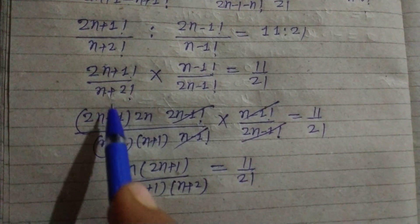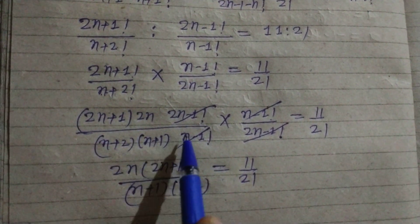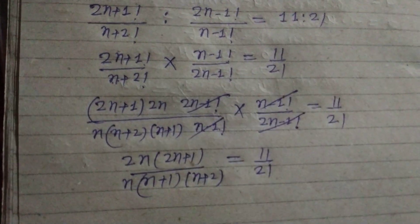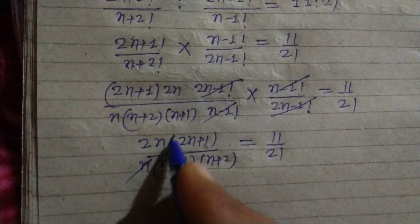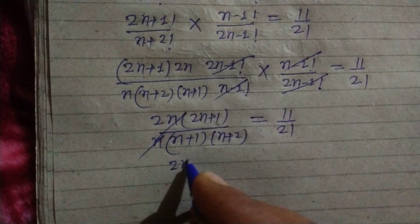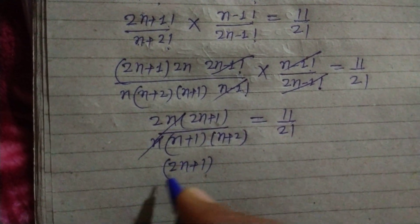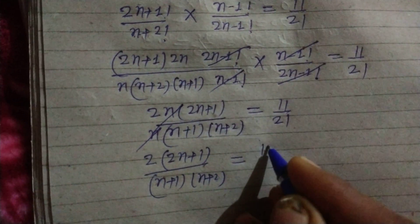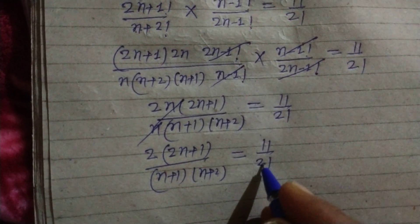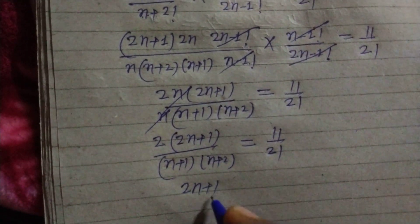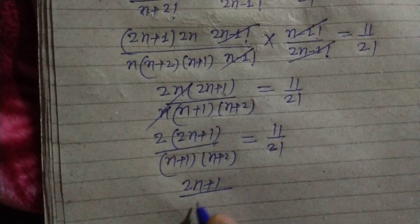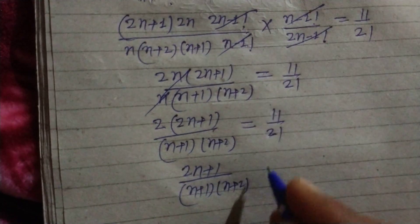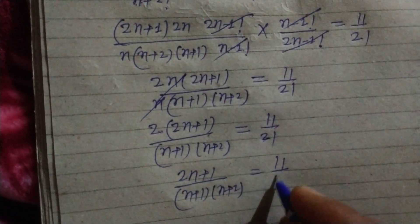We take out (n+2), (n+1), and n from the factorials. The n and (n−1)! terms cancel. After all cancellations we get (2n+1) · 2 upon (n+1) · (n+2) equal to 11 upon 21. We divide the 2 into 21, so it becomes (2n+1) upon (n+1) equal to 11 upon 42.